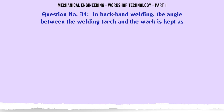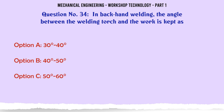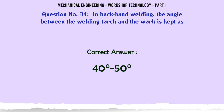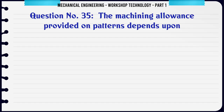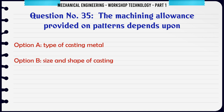In backhand welding, the angle between the welding torch and the work is kept as: A. 30–40°. B. 40–50°. C. 50–60°. D. 60–70°. The correct answer is: 40–50°.